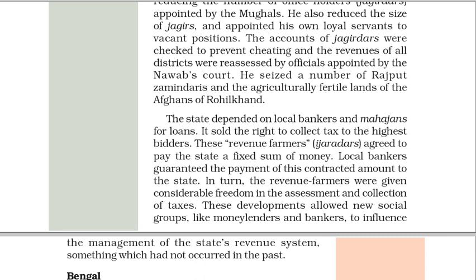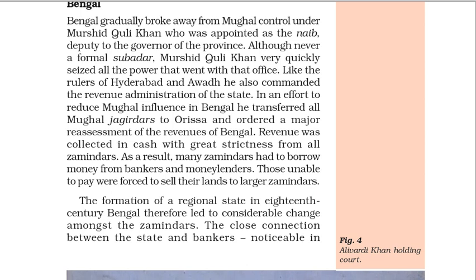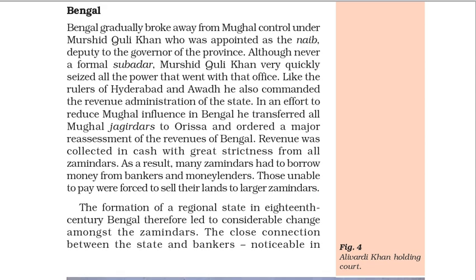The state depended on local bankers and Mahajans for loans. It sold the right to collect tax to the highest bidders. These revenue farmers — Ijaradars — agreed to pay the state a fixed sum of money. Local bankers guaranteed the payment of this contracted amount to the state. In turn, the revenue farmers were given considerable freedom in the assessment and collection of taxes. These developments allowed new social groups, like moneylenders and bankers, to influence the management of the state's revenue system, something which had not occurred in the past. In trying to consolidate their rule, why did Mughal Subadars also want to control the office of Diwan?